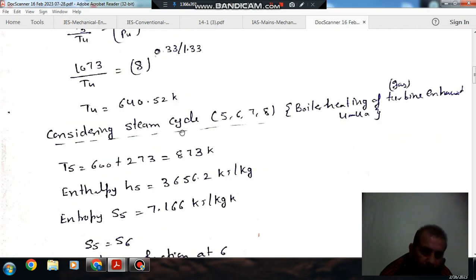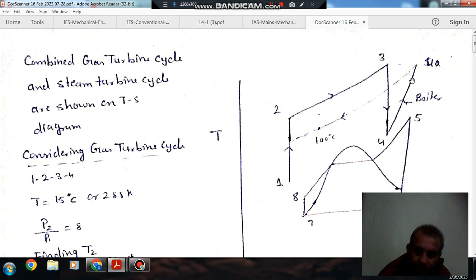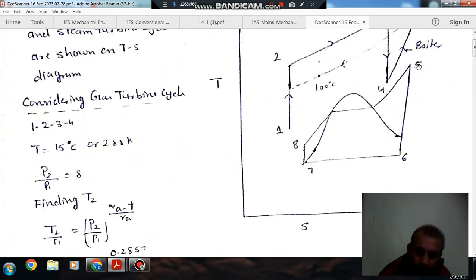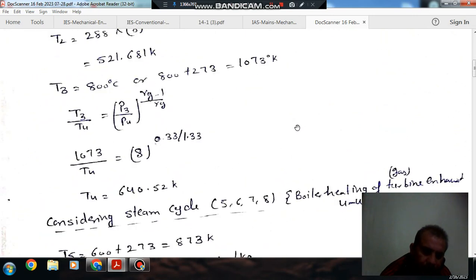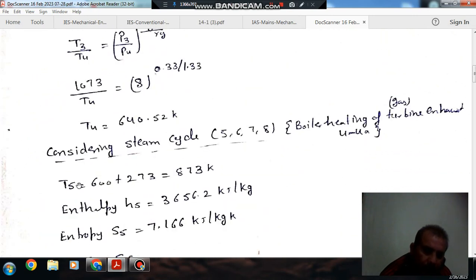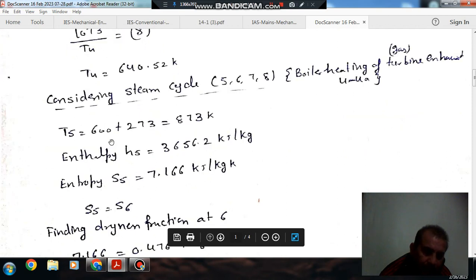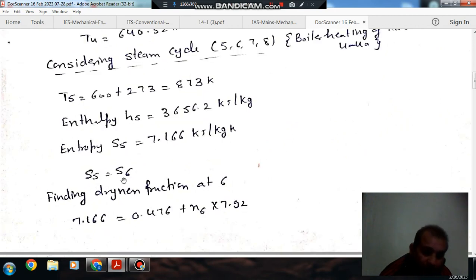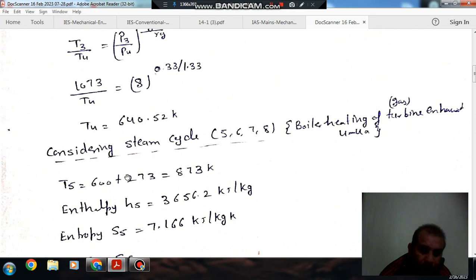Now we consider steam cycle. That is 5-6-7-8. And these gases are heated from 4 to 4A. But actual steam cycle will be 5-6-7-8. So we will consider first of all this 5-6-7-8. Temperature at T5 is given. Enthalpy at this temperature, enthalpy and entropy at this point is given. And entropy at S5 and entropy at S6 is equal because of isentropic process.